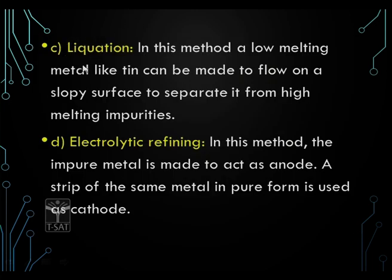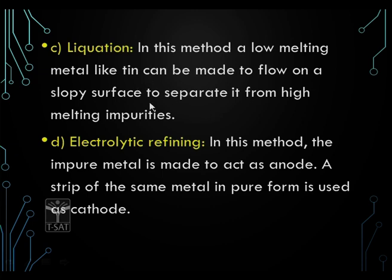The next method used for refining metals is liquation. In this method, a low-melting metal like tin can be made to flow on a sloped surface to separate it from high-melting impurities. Liquation is mainly used for separating low-melting metals like tin, which is very light and has a very low melting point, so it gets separated from metals and impurities which have high melting points.